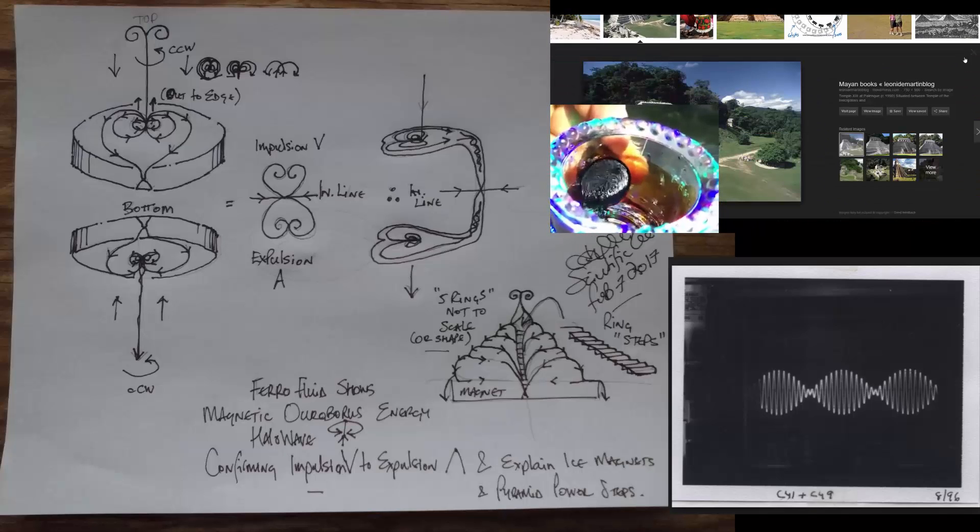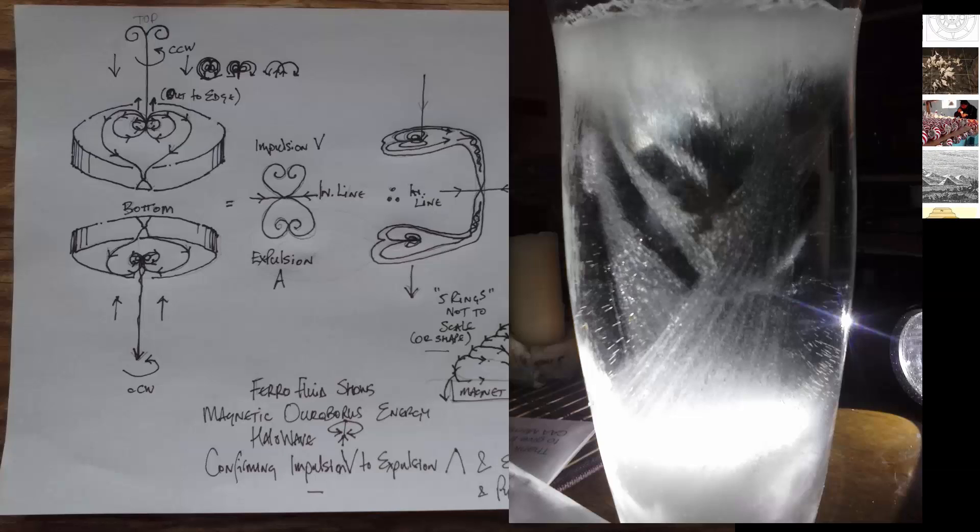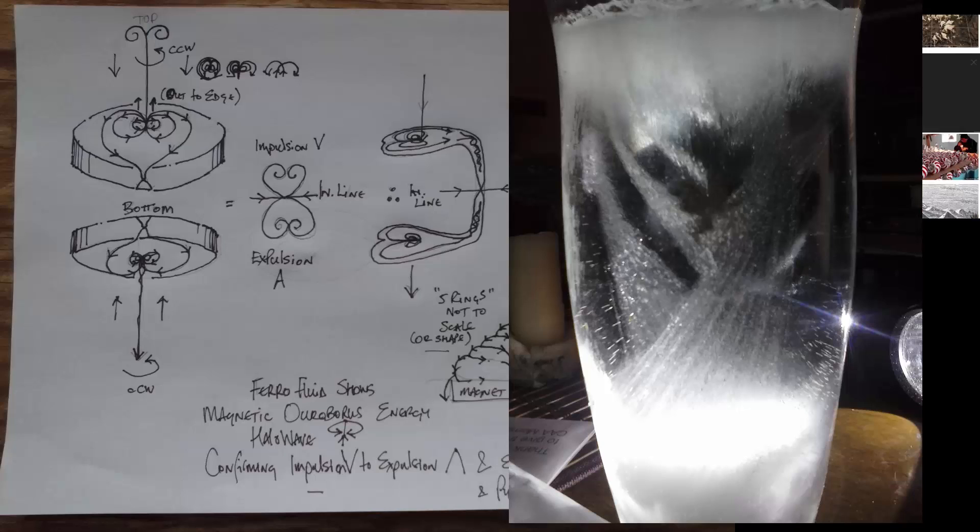But these have been stretched rather than compressed. This is ice in a frozen magnet, and as you can see, the top Ouroboros field comes down, crosses itself, and then underneath the magnet.